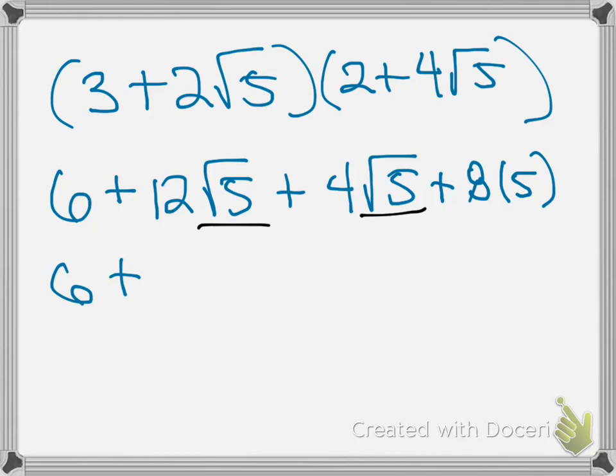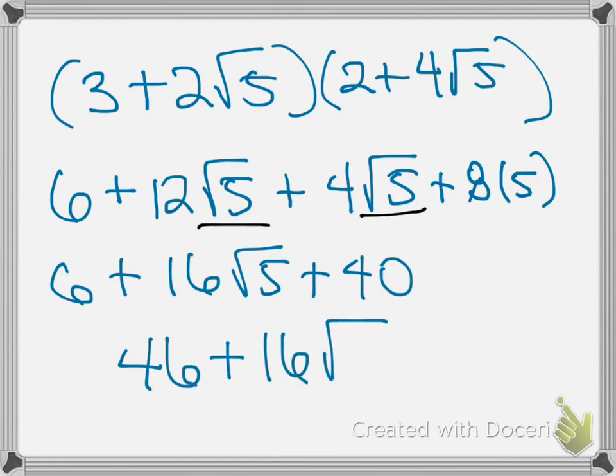So we will have 16 radical 5. And then 8 times 5 of course is just 40. So we can take one more step to simplify this. Our final answer is going to be 46 plus 16 radical 5. And that's all there is to it.